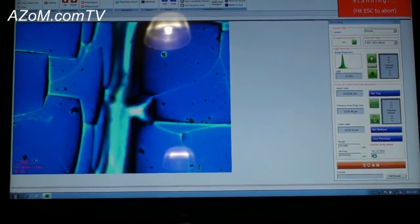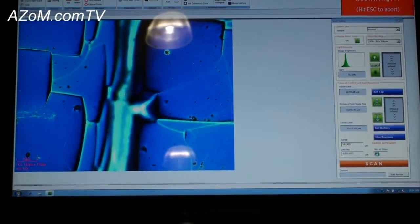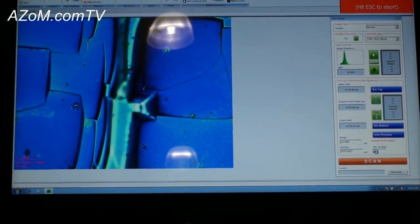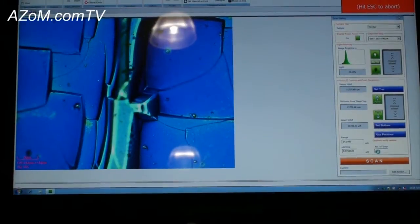At any point I can actually hit escape in the data collect if I really didn't want to run that particular spot. You can actually see the image slice that we're taking on the sample as we actually move the stage in the Z direction.